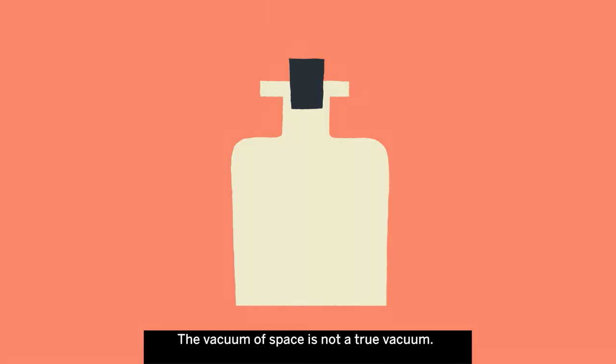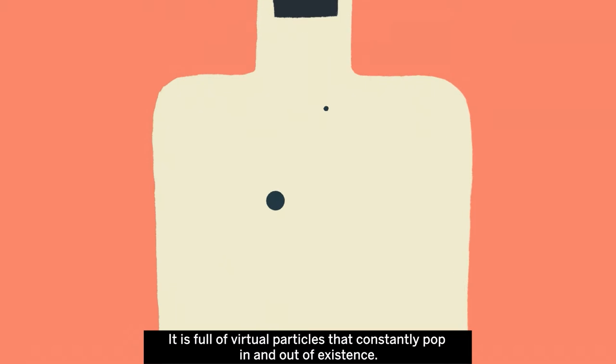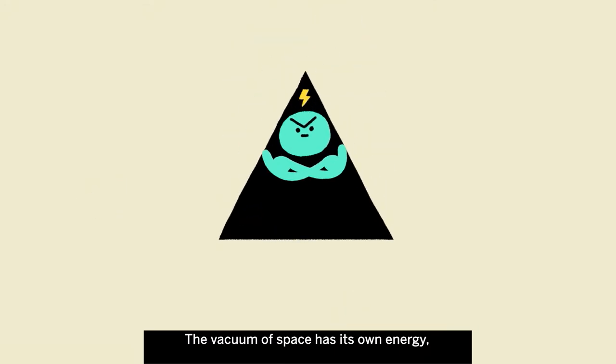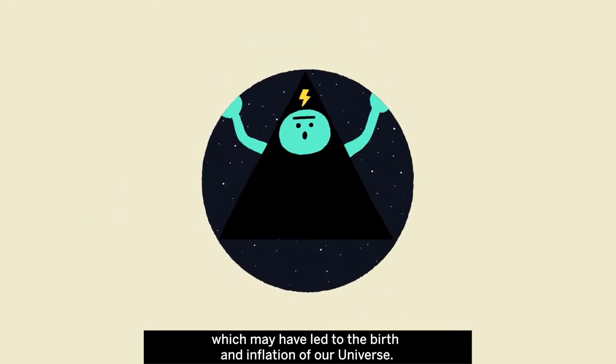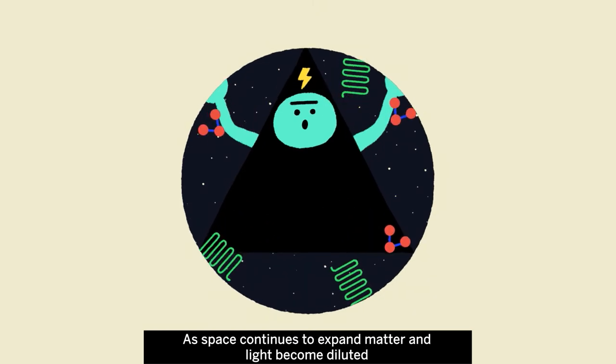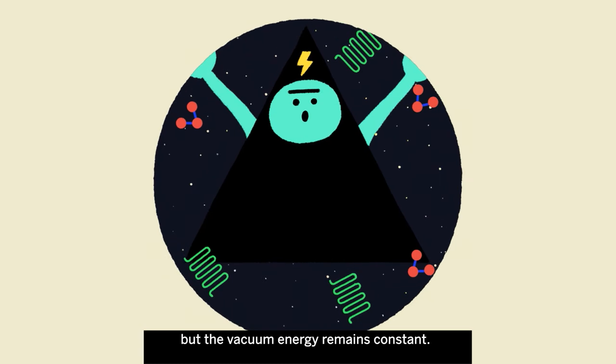The vacuum of space is not a true vacuum. It's full of virtual particles that constantly pop in and out of existence. The vacuum of space has its own energy, which may have led to the birth and inflation of our universe. As space continues to expand, matter and light become diluted, but the vacuum energy remains constant.